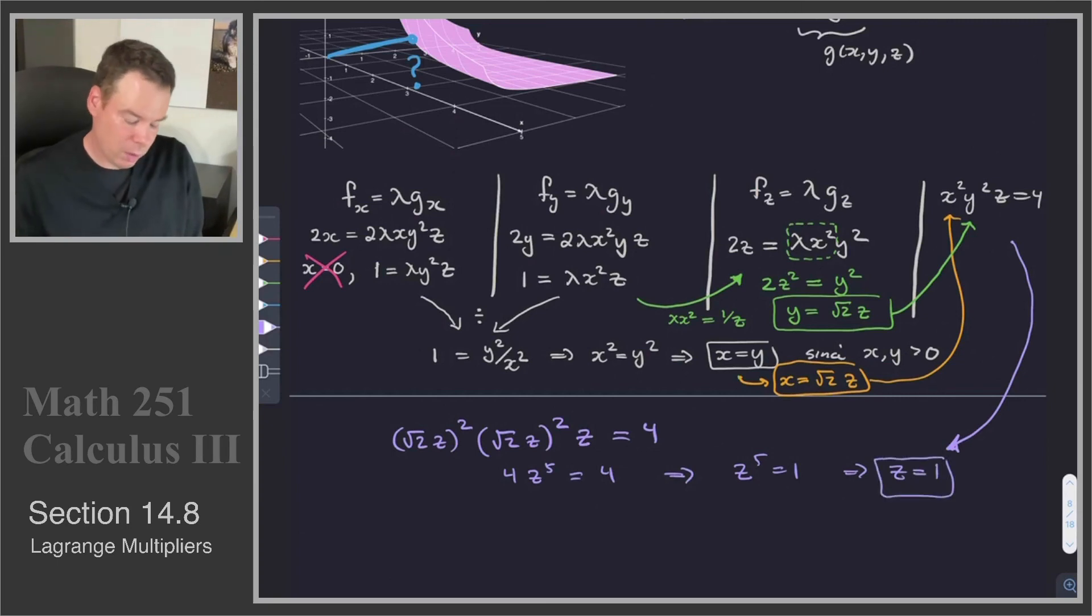And so now we've got what z is equal to, and we know what y and x are in terms of that. So therefore, x, y, z is equal to root 2, root 2, and 1.